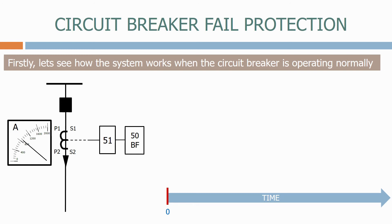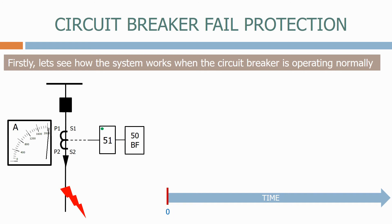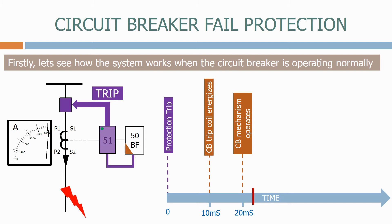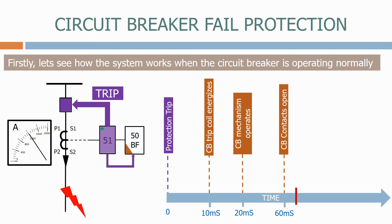Let's now apply a fault on the feeder. Once the current gets above a certain threshold, the protection relay will energise the circuit breaker trip coil. After a short time delay, the circuit breaker mechanism will operate. The circuit breaker contacts will open and eventually the current will stop flowing.